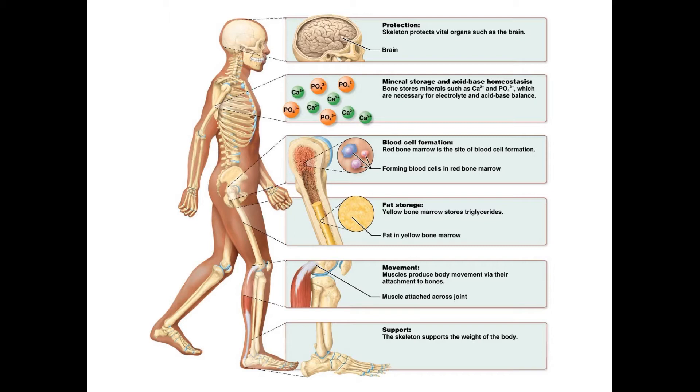But bone does so much more than just hold you up and protect your organs. Bone acts as a storage site for minerals like calcium. Think of bone like a bank. Your body can store calcium in your skeletal system by building bone or withdraw it later by breaking bone down. Bone building is referred to as bone deposition and bone breakdown is called bone resorption. Outside of just mineralized bone itself, the skeletal system is also a location where we can find bone marrow. Bone marrow can be divided into red bone marrow, responsible for making red blood cells, and yellow bone marrow, which is the location of fat storage in the form of triglycerides.